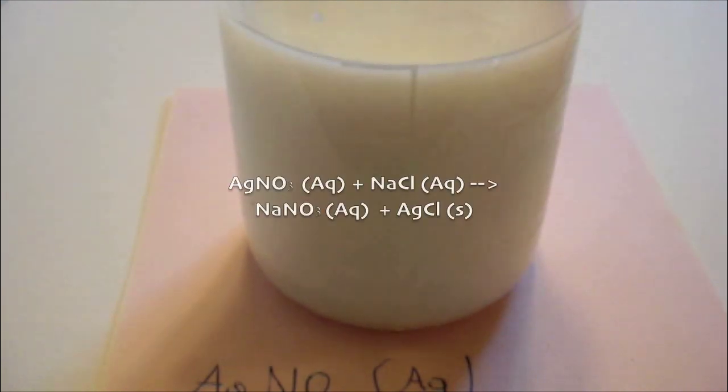When you are adding the sodium chloride solution, you will see white clouds appear. This is the silver chloride. This is the reaction: silver nitrate plus sodium chloride gives sodium nitrate and silver chloride.